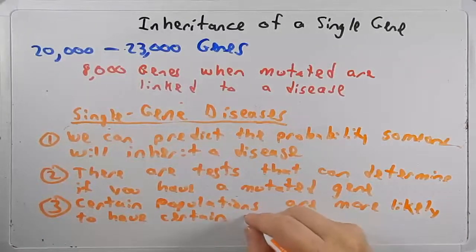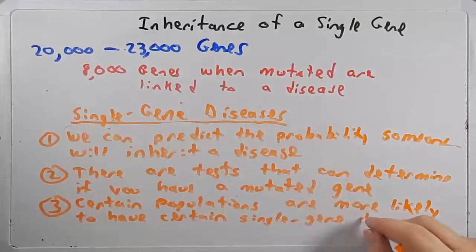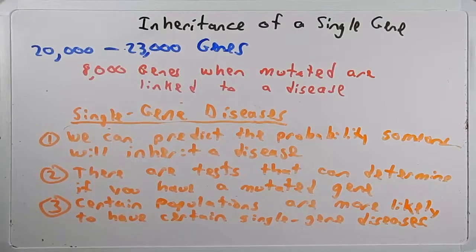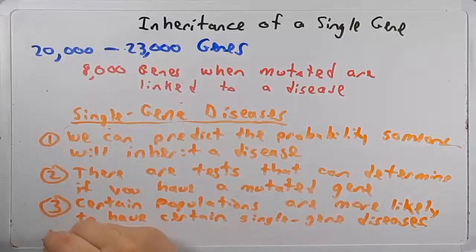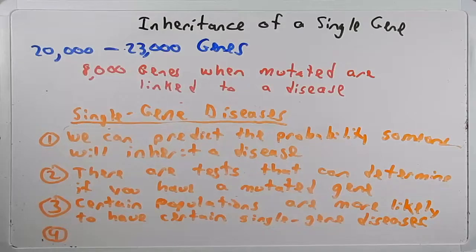A third point I'd like to make is that certain populations are more likely to have certain diseases, that is, certain single gene diseases. And this occurs for many reasons, and we'll talk about this later in the semester when we talk about population genetics. We know when we have more isolated communities that certain mutations may be in a higher proportion in those communities.